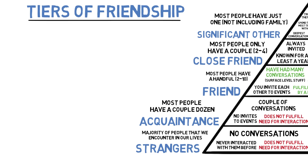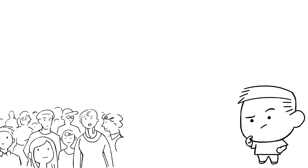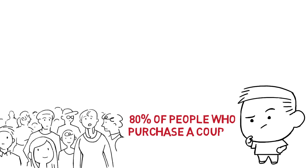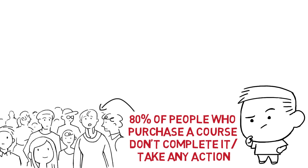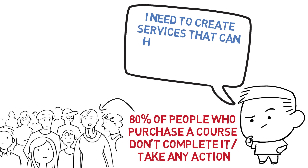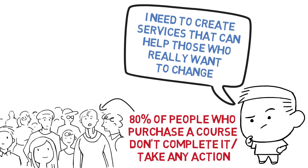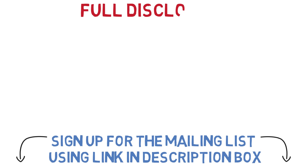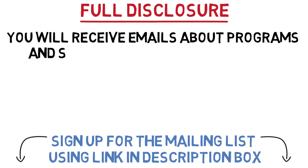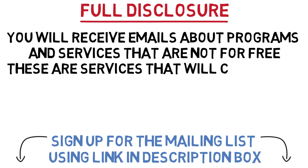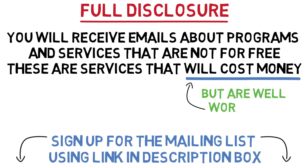Now, I said there are only five tiers of friendship, but the truth is there are actually two more additional tiers. But before we get into that, I want to mention something quickly. I've been coaching people for quite some time and I've noticed something concerning: the large majority of people who go through courses like this do not take action and reap the benefits. It's estimated that 80% of people who purchase a course will either not finish it or not take any action. Only 20% will actually get something out of it. Because of this, I decided to create a coaching program to go along with these courses.